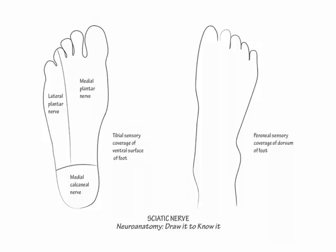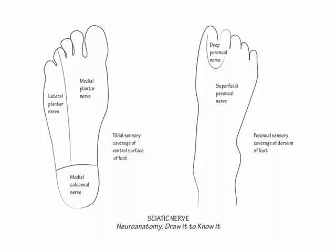Next, return to the tracing of the dorsal surface of the foot. Indicate the superficial peroneal nerve covers all of it except for the webbing between the great toe and second digit. In our drawing of the sensory maps of the body, we will show that the superficial peroneal nerve covers most of the anterior lower leg, except just below the knee where the common peroneal nerve provides the leg's sensory coverage.